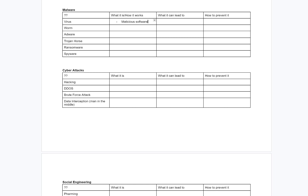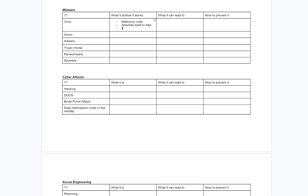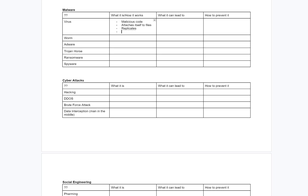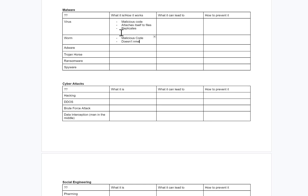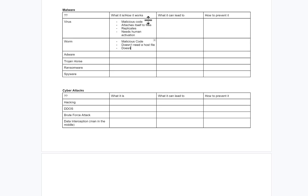A virus: malicious code — malicious software code will do — attaches itself to files and replicates. A worm: malicious code, doesn't need a host file. A virus needs a host file; a worm doesn't. A virus needs human activation; a worm doesn't need human activation.